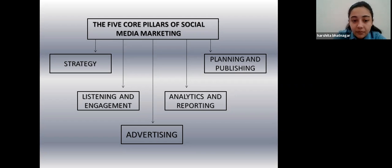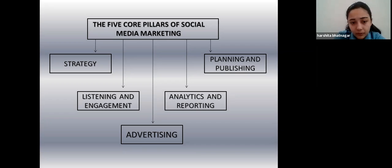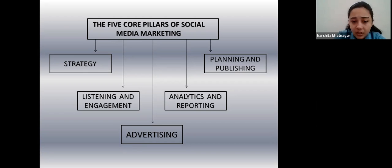The second pillar is planning and publishing. Publishing on social media is as simple as sharing a blog post, an image, or a video on a social media platform. You have to plan your content ahead of time instead of creating and publishing content spontaneously. Also, in order to ensure that you are maximizing your reach on social media, you will need to publish great content that your audience likes.